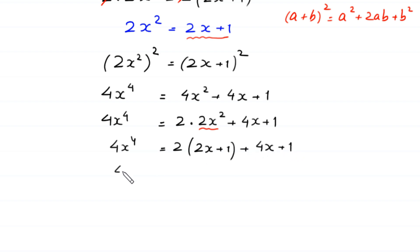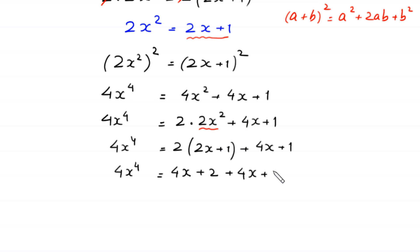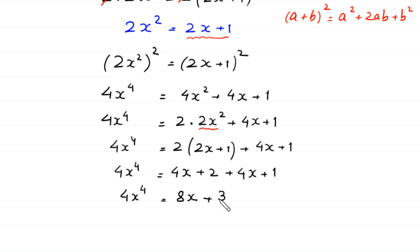Next, 4x to the power 4 equals 4x plus 2 plus 4x plus 1, which gives 4x to the power 4 equals 8x plus 3. From here, we take the square of both sides.